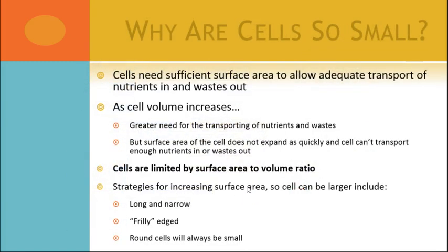So the first question I want to ask you is: why are cells so small? You have to look at surface area in this case. Cells exchange nutrients, they exchange waste products, they exchange gases across their membrane. And they need to have enough surface area to move those products efficiently — nutrients in, waste out is essentially what we're looking at.